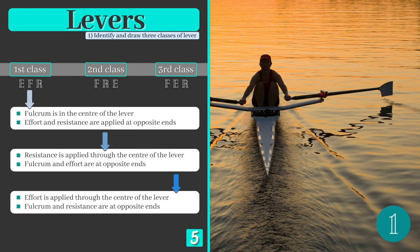Rowing is an example of a first class lever in action, as the effort and resistance are applied to opposite ends of the oar, while the fulcrum sits between these forces.